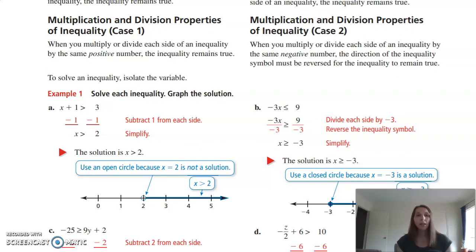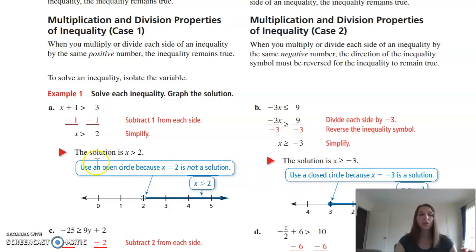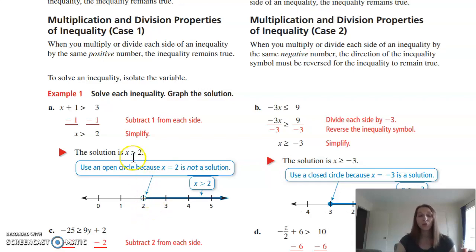Example A: X + 1 > 3. To get X by itself, we subtract 1 on both sides, leaving X > 2. On the number line using numbers 0 through 5, we use an open circle because it is greater than (not equal to). So we place an open circle at 2 and shade to the right, because X is greater than 2.